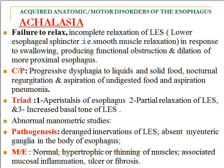Achalasia causes progressive dysphagia to both liquid and solid material, associated with nocturnal regurgitation due to lower esophageal obstruction, proximal esophageal dilatation, and accumulation of material. Aspiration of undigested food can result in aspiration pneumonia. The three cardinal characteristics of achalasia are: aperistalsis of the esophagus, partial relaxation of the lower esophageal sphincter, and increased basal tone of the lower esophageal sphincter, all leading to functional obstruction.